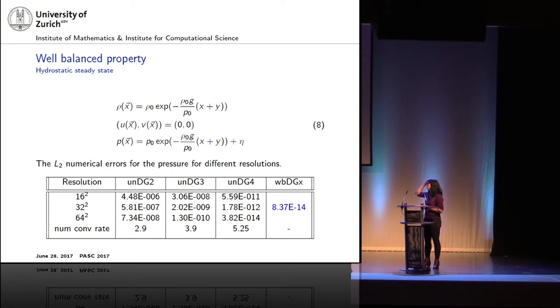To talk about this well-balanced property, this is first the hydrostatic steady state, it's just basically an exponential profile, and it's hydrostatic, so we don't have any velocities. This eta here is to denote the perturbation, but here, first the results, we assume eta to be zero. What we can see is that if you increase the resolution for an unbalanced scheme, and you increase the order, eventually you can approximate the steady state very well, but this is at a high cost. Whereas if you have a well-balanced scheme, you're really not dependent on the order, and you can still be very close to the steady state, to machine precision.